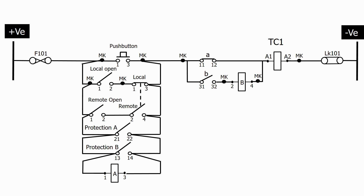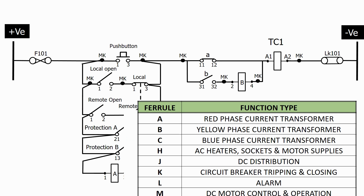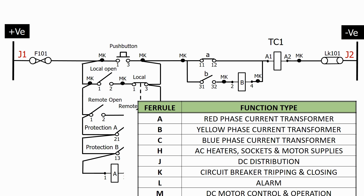Let's now add some ferrules. What ferrules should we use for the positive and negative busbars? It's common for these busbars to feed multiple types of circuits. So in this case we use the DC distribution ferrule prefix, which is J. Following a similar philosophy from the last circuit, we label the positive busbar J1 and the negative busbar J2.